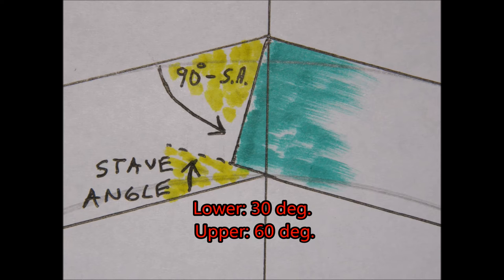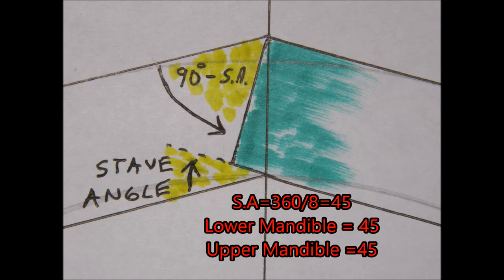For an octagon, the stave angle is 45 degrees — that's 360 divided by 8. Therefore, the lower mandible angle is 45 degrees and the upper mandible is also 45 degrees — that is, 90 degrees minus 45 degrees. This is the only polygon where the angles are both the same.